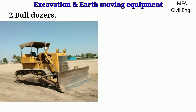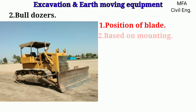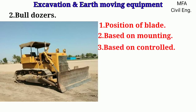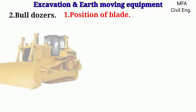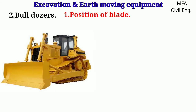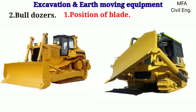Bulldozers are basically classified on the basis of the position of the blades, based on the mounting, and based on the control. Based on the position of the blades, bulldozers are further classified into two types: bulldozers with a blade perpendicular to the direction of movement, and bulldozers in which the blade is set at an angle to the direction of movement.